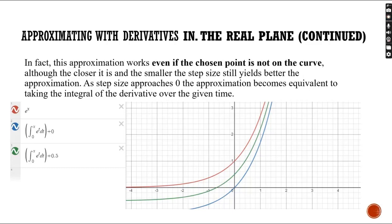This is a graphical representation of the concept, starting with the blue graph and working our way towards the red graph. The approximation works even if the chosen point is not on the curve. And the smaller step size yields better approximation. As the step size approaches 0, the approximation becomes equivalent to taking the integral of the derivative over the given time.